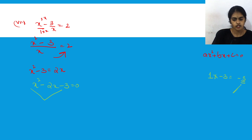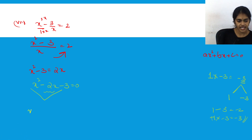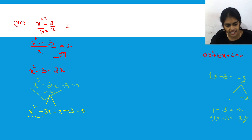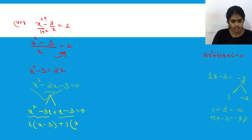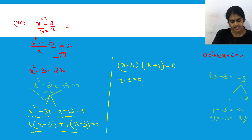The product of the x² coefficient (1) and the constant (-3) is -3. We split -3 as +1 and -3, since 1 + (-3) = -2 and 1 × (-3) = -3. So x² - 3x + x - 3 = 0. Taking x common: x(x - 3) + 1(x - 3) = 0, giving (x - 3)(x + 1) = 0. Therefore x = 3 or x = -1.